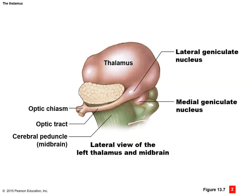Here we can see the thalamus with the rest of the diencephalon removed, and we can see examples of where the lateral and medial geniculate nuclei are as they relay through. The lateral geniculate nucleus is effectively an extension of the optic chiasm and the optic tract, and the medial geniculate nucleus extends out laterally — it's medial simply because it's on the inside, but it branches up and around and continues through the lateral portion of the head.